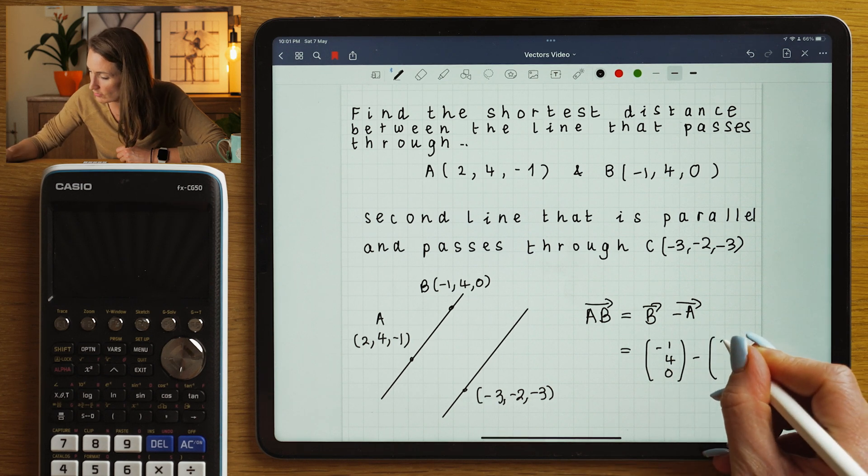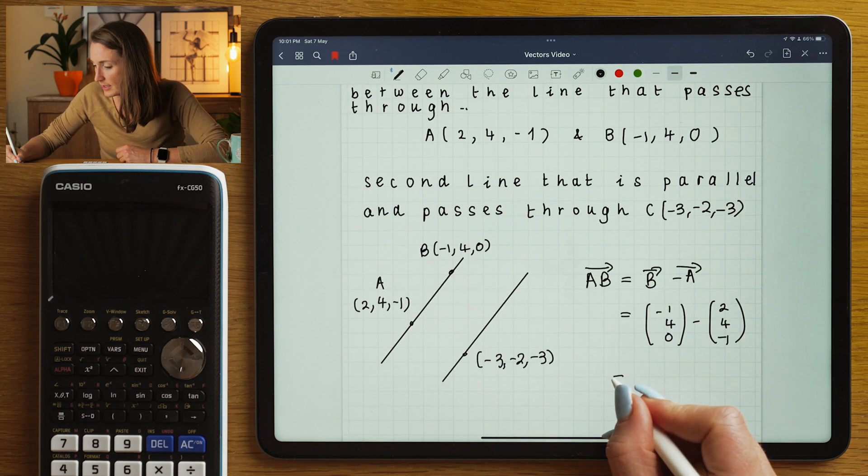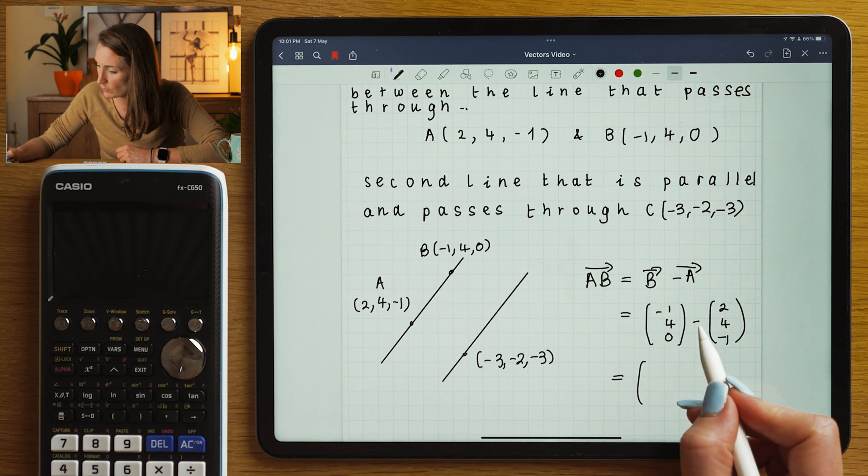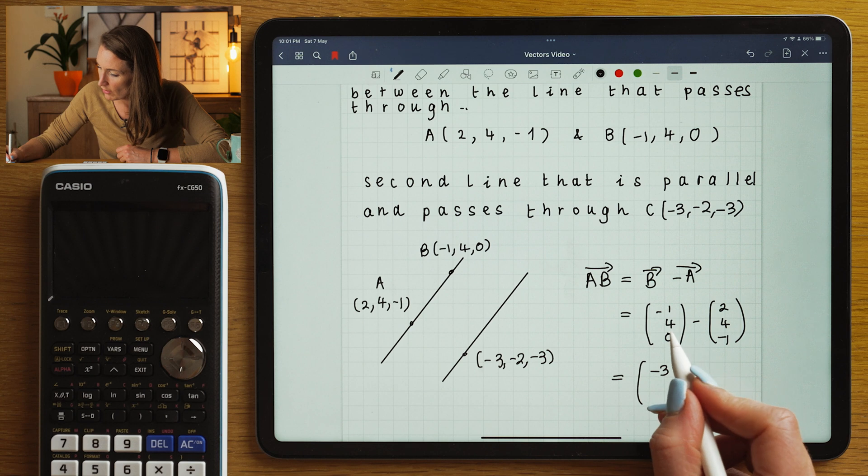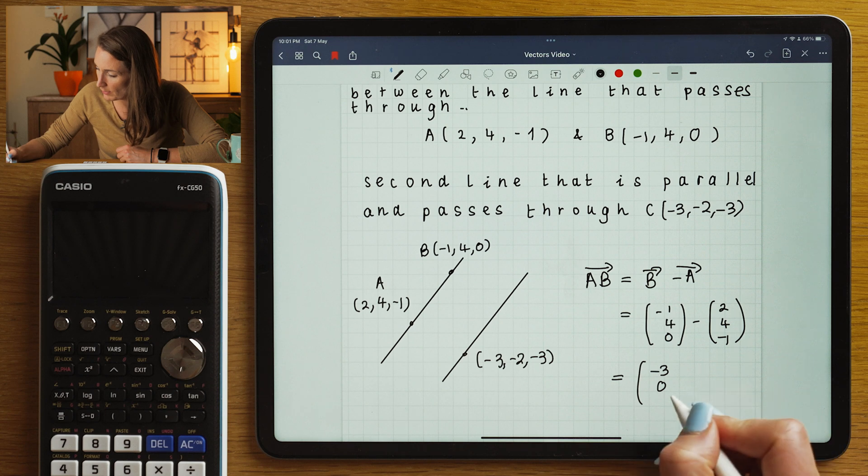And we're going to subtract A, which is (2,4,-1), which gives us the vector -1 minus 2 is -3. 4 minus 4 is 0. 0 minus -1 is going to be plus 1.